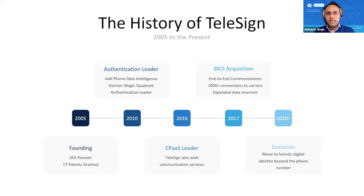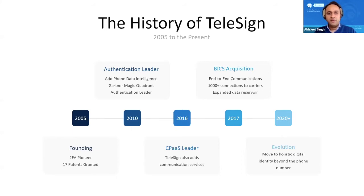In 2017, something exciting happened — one of the world's largest international communication enablers and one of the world's largest telecommunication networks, Belgacom International Carrier Services, acquired us. They helped us expand our reach, improve our coverage, and provide more data points about phone numbers around the world. Going forward, we also have big plans to move beyond phone numbers into a much broader spectrum of digital identity.